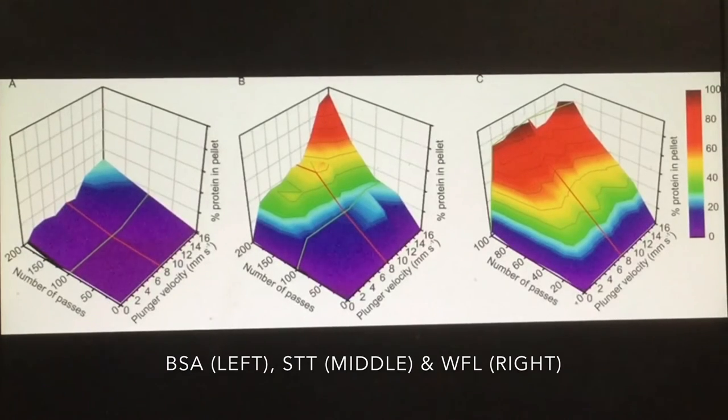However, the two different proteins are really sensitive to the extensional flow and they can easily be differentiated based on their 3D surfaces as well. So if you see the STT, for example, which is more resistant, it's covered most of the blue area which corresponds to nearly 20 to 40%. However, the WFL, which is more aggregation-prone, is mostly covered in the red area. And despite that, these two proteins differ only by six residues.